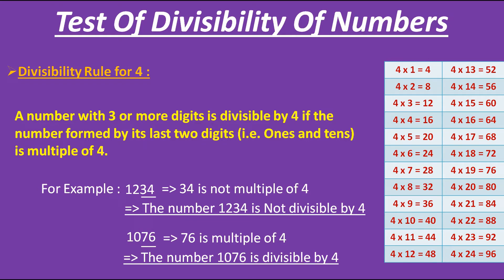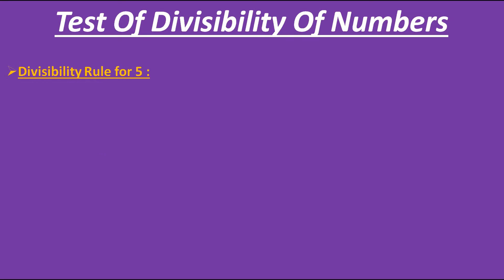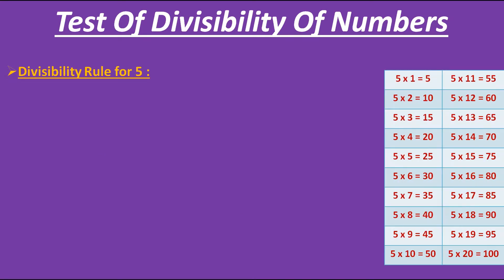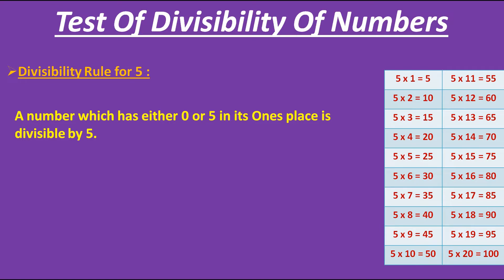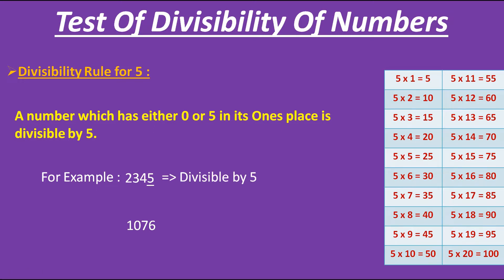Now let's check the divisibility rule for 5. It's easy. If you look at the table of 5, you will understand that each and every multiple of 5 has either 5 or 0 at the unit place. Therefore, the rule says that a number which has either 0 or 5 in its unit place is divisible by 5. Let's take examples. Here I am taking two numbers. Here we have 5 on its unit place, and therefore the number 2345 is divisible by 5. In the second number we have 6 on its unit place — we don't have 0 or 5. Therefore, this number is not divisible by 5.